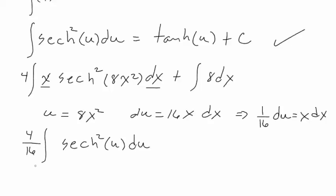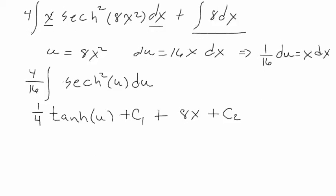So let's simplify this down. 4 over 16, this is going to end up being 1 over 4. And this integral is equal to hyperbolic tan of u plus c. And we're going to call this c1 because now I'm going to take the integral of this one. And so this becomes plus, and then of course the integral of 8 is going to be 8x plus, and then we'll call this some other constant here. Now of course we want to make sure we get everything back in terms of x, right? So that means we're going to have to do something over here.